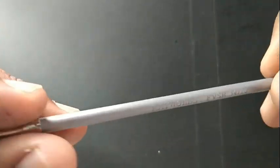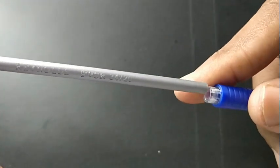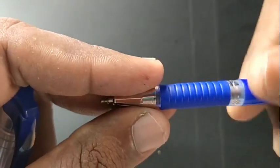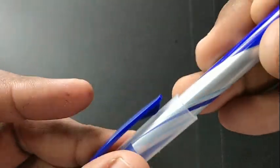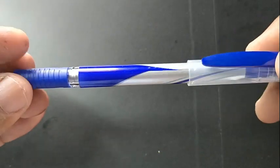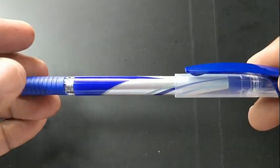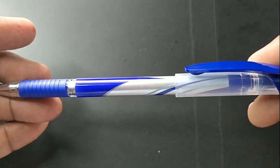Reynolds has a 1.0mm tip version of this pen which is used in many exams by students. This is the 0.7mm version of the pen.